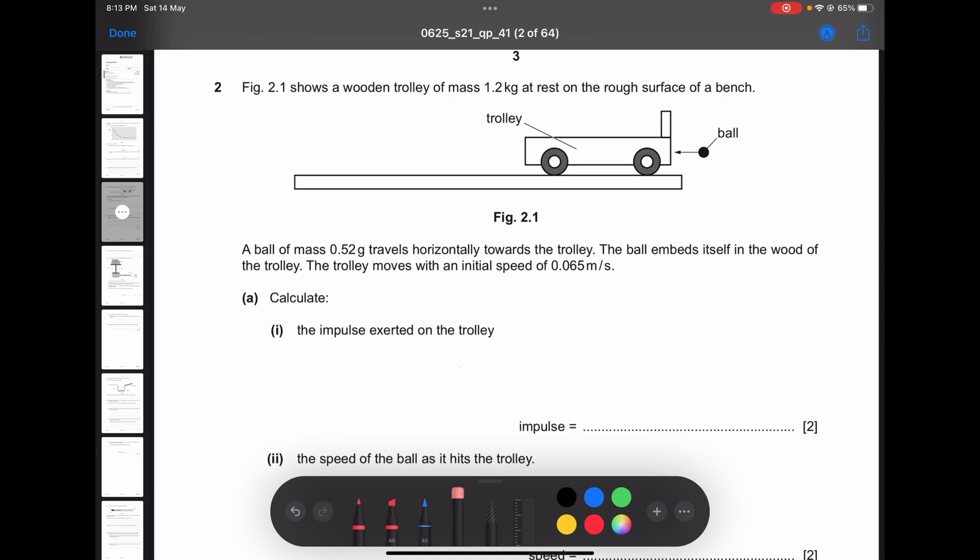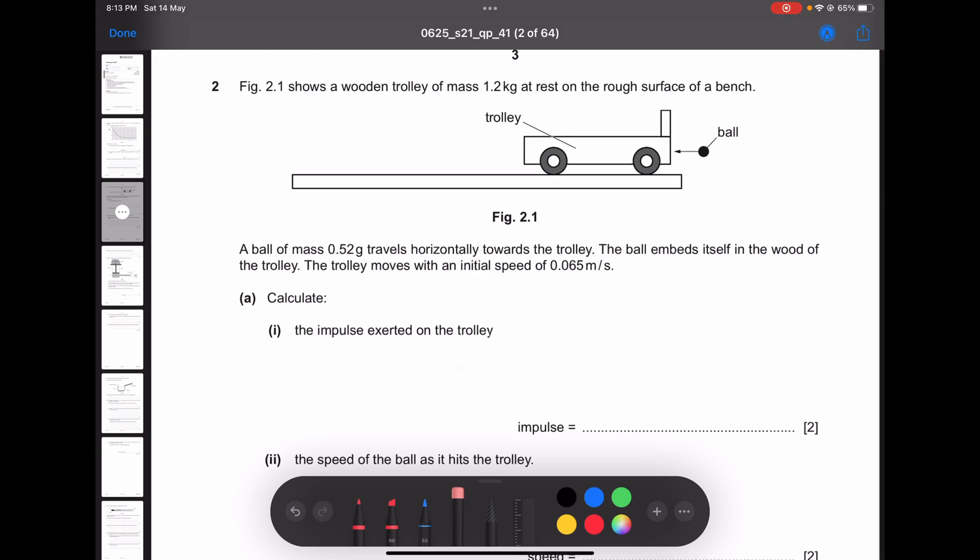Figure 2.1 shows a wooden trolley of mass 1.2 kilogram at rest, so initial velocity is zero, on the rough surface of a bench. The ball of mass 0.52 gram travels horizontally toward the trolley. The ball embeds itself in the board of the trolley.